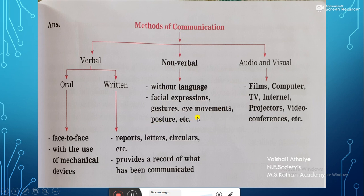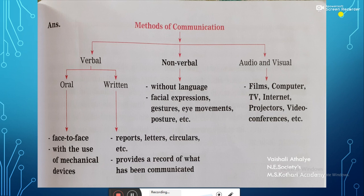The third method mentioned in the paragraph is audio and visual. Films, computer, television, internet, projectors, video conferences, etc. are the different modes of audio and visual methods of communication. In this way, a tree diagram can be prepared when there is a classification or types of a certain thing being expressed. Tree diagrams are also useful for preparing family trees.